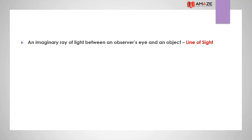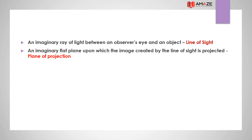An imaginary ray of light between an observer's eye and an object is called a line of sight. An imaginary flat plane upon which the image created by the line of sight is projected is called the plane of projection.